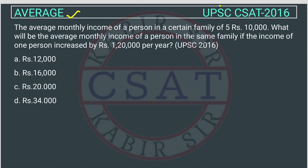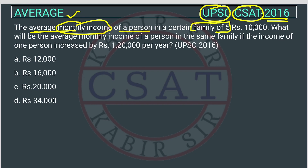This is a question on averages asked in the UPSC CSET exam 2016. The average monthly income of a person in a certain family of 5 is given. How many members are there in the family? 5. And what is the average? 10,000.